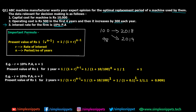The important formula is: present value of rupee 1, denoted v^(n-1), is given by 1 divided by (1 + r)^(n-1), where r is the rate of interest and n is the period or year for which you are calculating the present value.